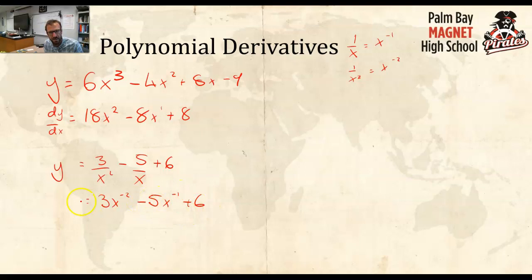Okay, and now it is a piece of cake to do. dy over the derivative of this is going to be, I'm going to put the negative 2 out front. Negative 2 times 3x. Now,